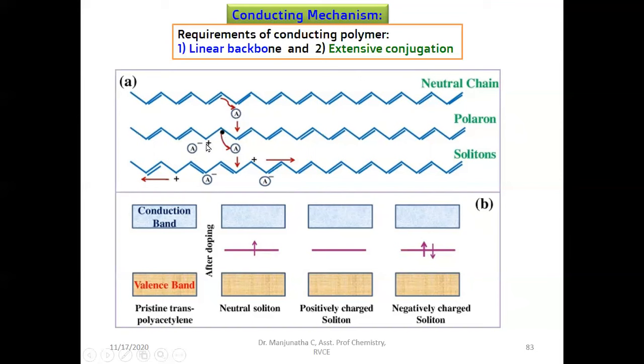As a result, a positive and a free radical electron, these are called excitons, are present next to each other. Such a system is called polaron.